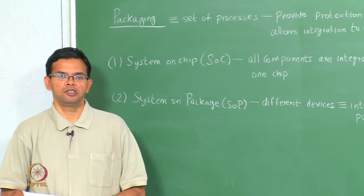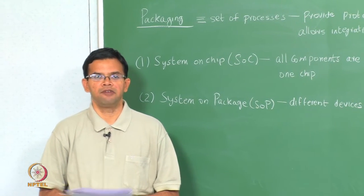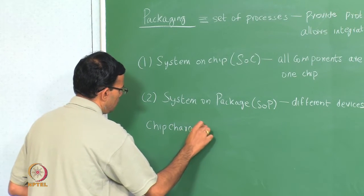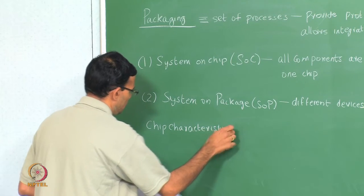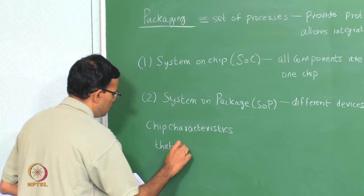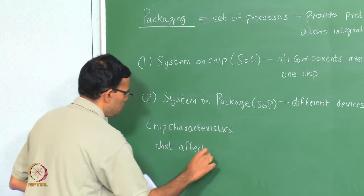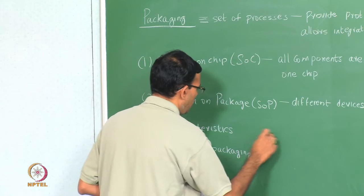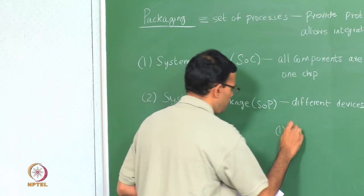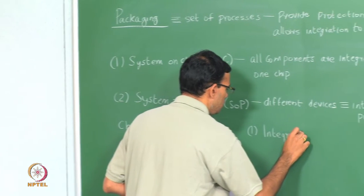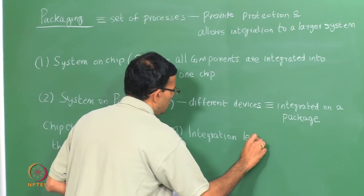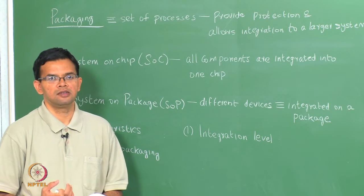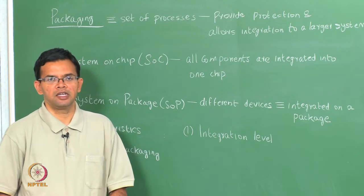When we look at the packaging process, the chip characteristics that basically affect packaging: the first one is the integration level. This refers to whether you have a system on chip or a system on package. It also defines things like how many leads you have and how many connections have to be made.